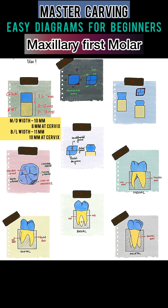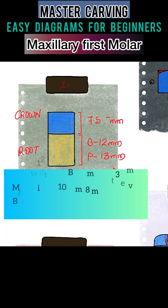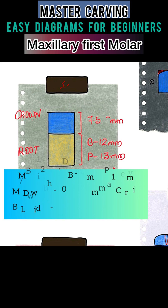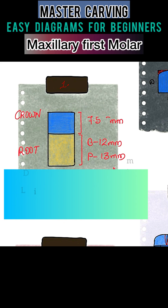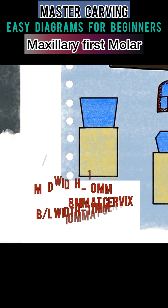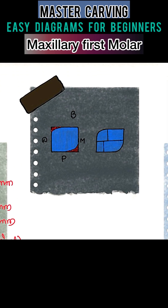Learn carving through these basic steps with easy diagrams for the maxillary first molar. We will take a wax block and divide it into crown and root. Crown height is 7.5 mm, root lengths: mesiobuccal 12 mm, distobuccal 13 mm, and palatal 12 mm. Mesiodistal width is 10 mm, cervical taper 8 mm, and buccolingual width 10 mm, which is wider. Connect the lines to form the crown taper.